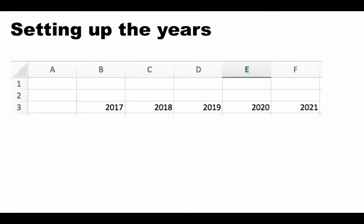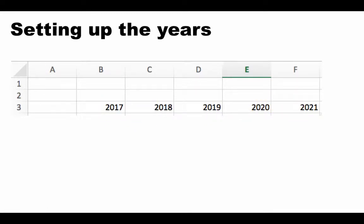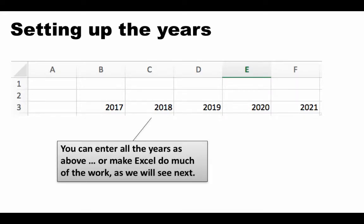The first thing we want to do is set up the years 2017 to 2021. That requires entering the values 2017 all the way to 2021 in the cells B3 through F3. One way is to simply manually enter the years — that's fine since there are only five years — but what if there were 20, 25, or even 50? Entering all those 50 values manually would be very time consuming, so let's look at a way Excel allows us to automate this.